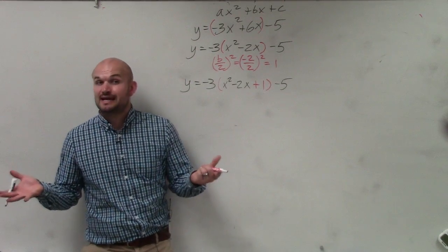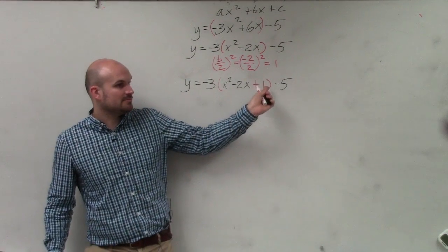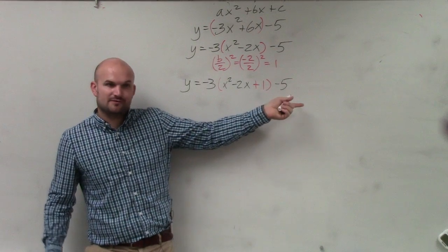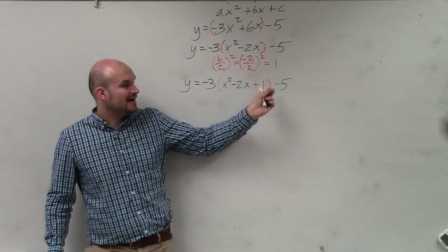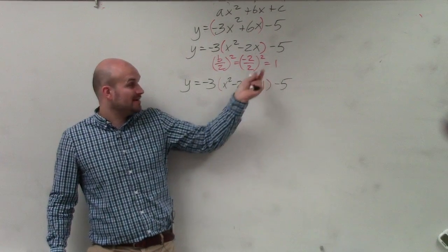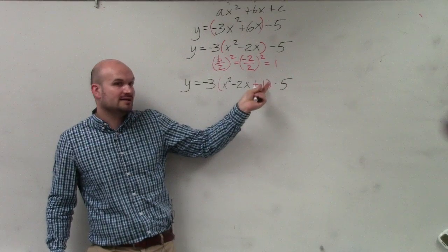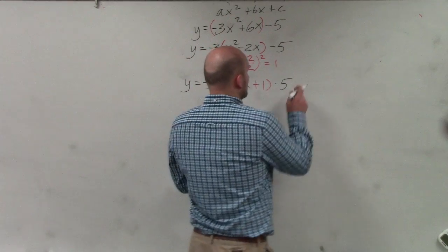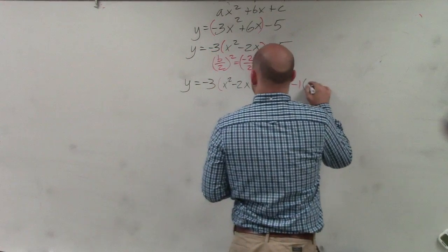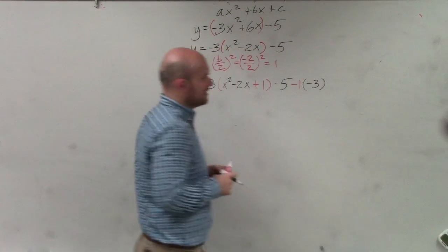We're trying to keep the equation the same. So if you add a number, you have to subtract it if you want to keep the equation equal in value. So if I add 1, I have to subtract 1. But I'm really not adding 1. I'm adding a 1 that, by distributive property, is being multiplied by negative 3. So when I subtract the 1, that needs to be multiplied by negative 3.